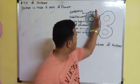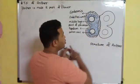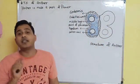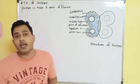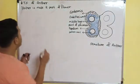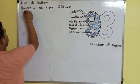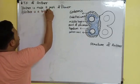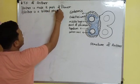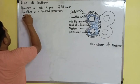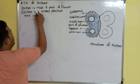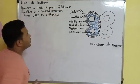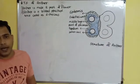Second point: anther is a bilobed structure. This is one lobe and this is another lobe. Since it is a bilobed structure, it is hence called as dithecous.